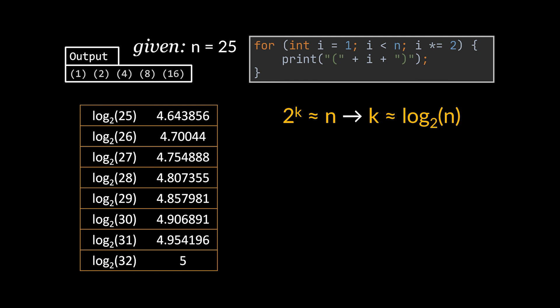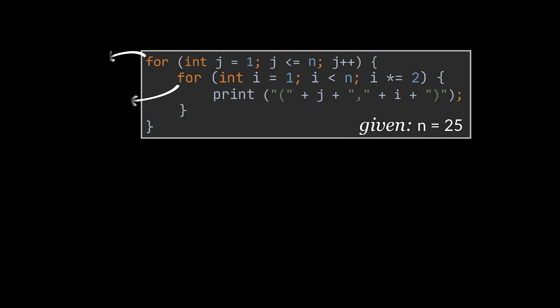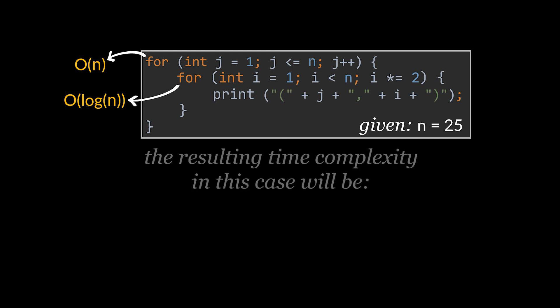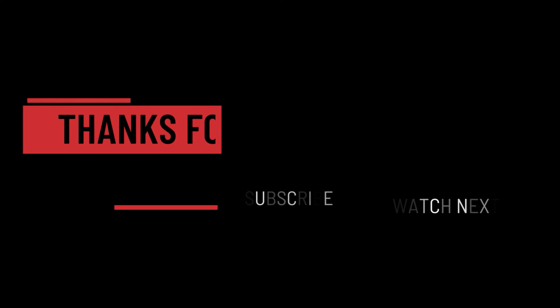You may be asking: if k = log n, why does the Big O equal O(log n)? Well, k is the number of iterations and operations we had to do, and Big O denotes this information reflecting its variation based on time — that is exactly why we have O(log n). Now if we take this same for loop and wrap it with another loop going from 1 to n, we have two loops: one with O(n) and another with O(log n). The resulting complexity will be O(log n) × O(n) = O(n log n).